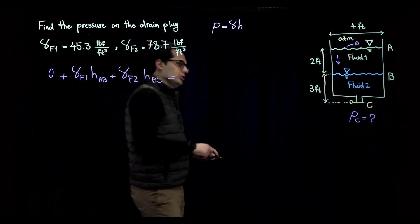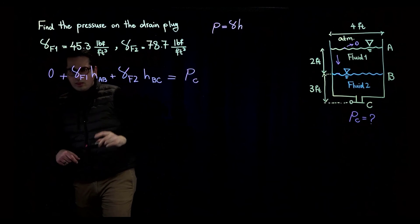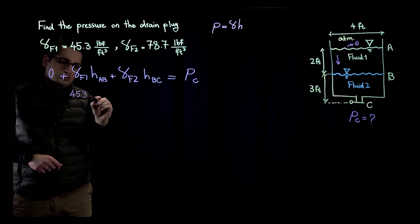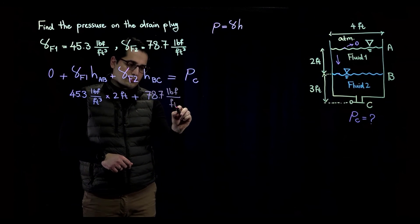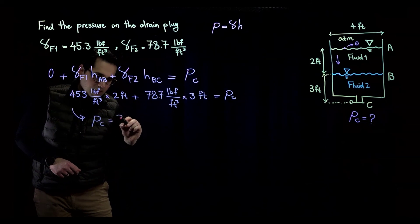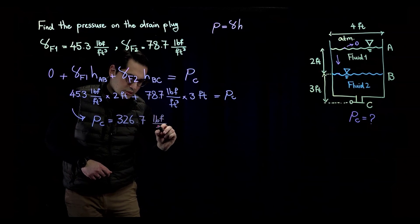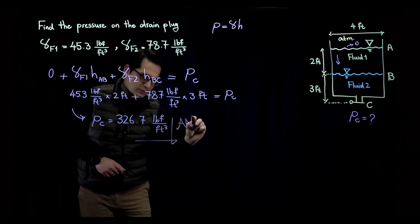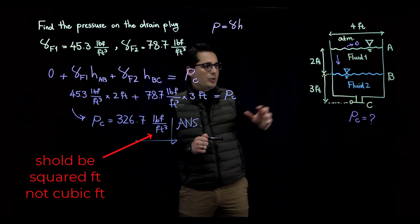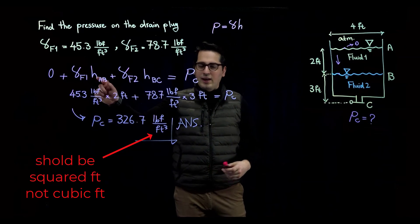Plugging in the numbers, the pressure at point C comes out to 326.7 pound-force per square foot. The key lesson from this example is that whenever you have multiple fluids, as you move down through the fluid you must use the appropriate gamma and H for each specific segment from interface to interface.